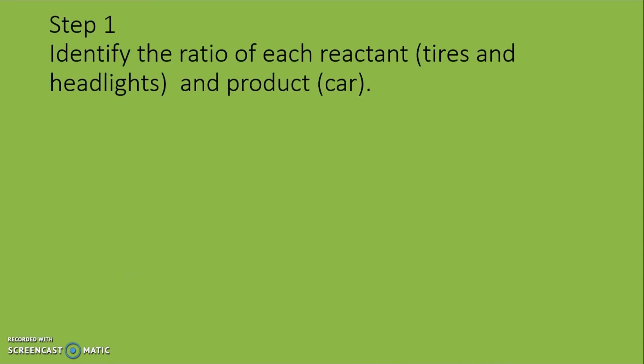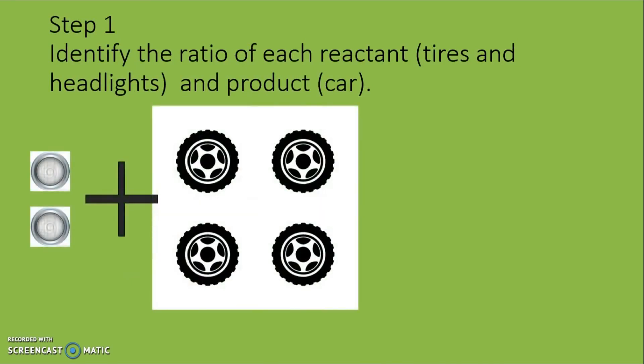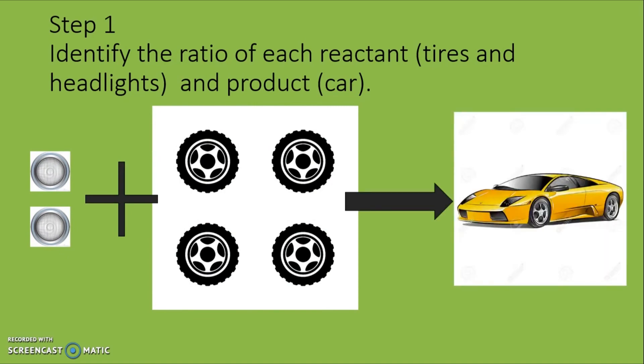Step 1, in order for us to assemble a car, 4 tyres and 2 headlights are needed. In this example, imagine that the tyres and headlights are reactants while the cars are the product formed from the reaction between 4 tyres and 2 headlights. I will have a ratio of 4 is to 2 is to 1.